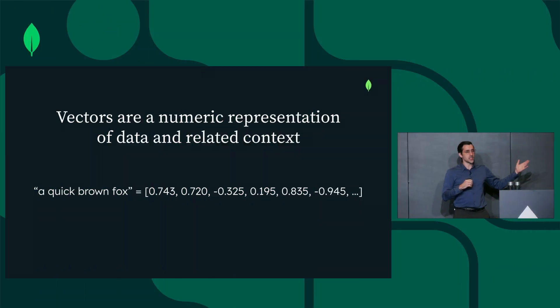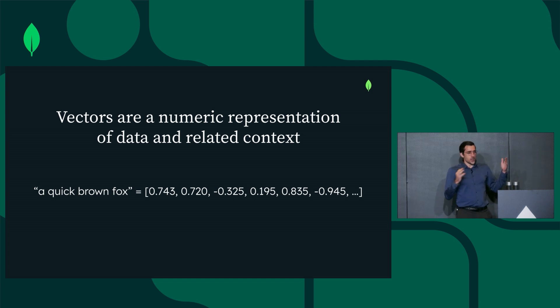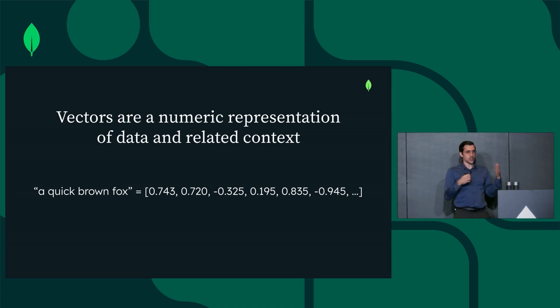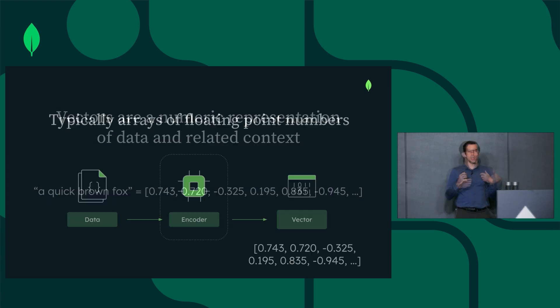Vectors are these high-dimensional arrays — it's an array of floating-point numbers, and it represents data and its associated context.